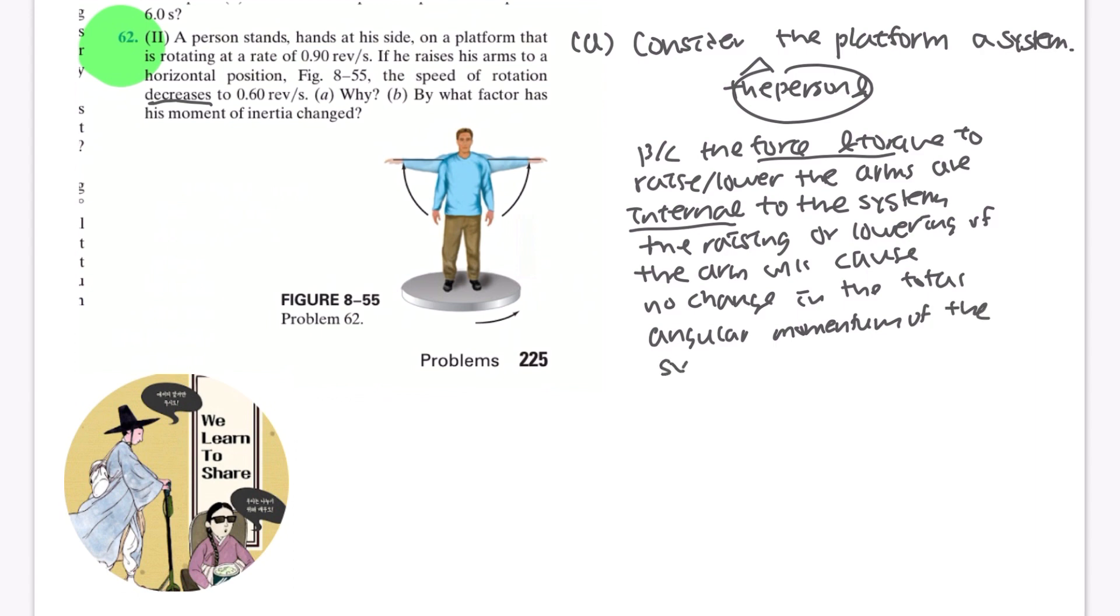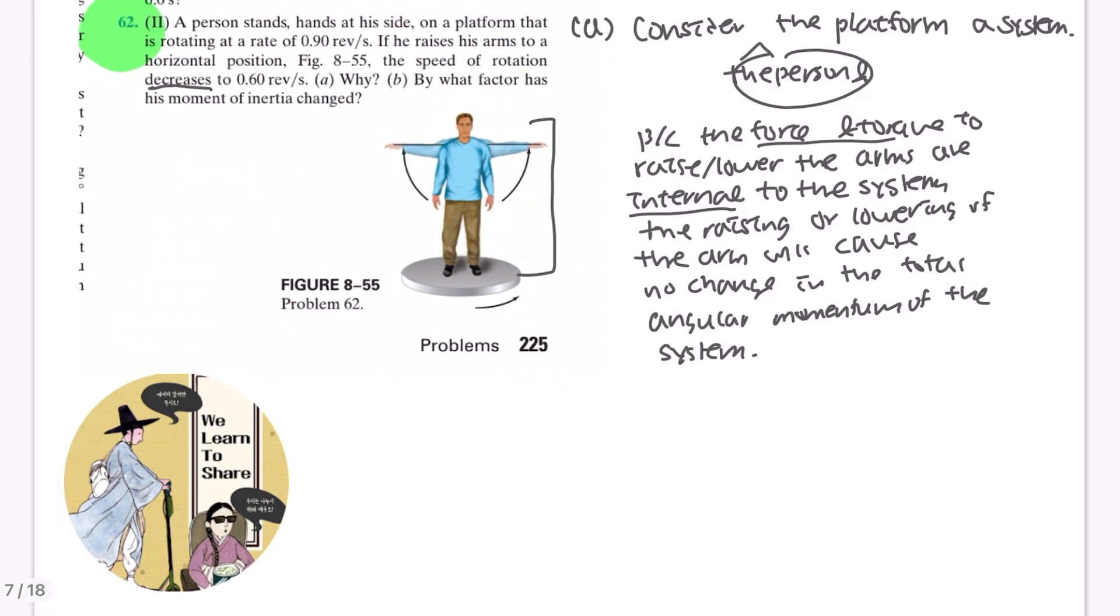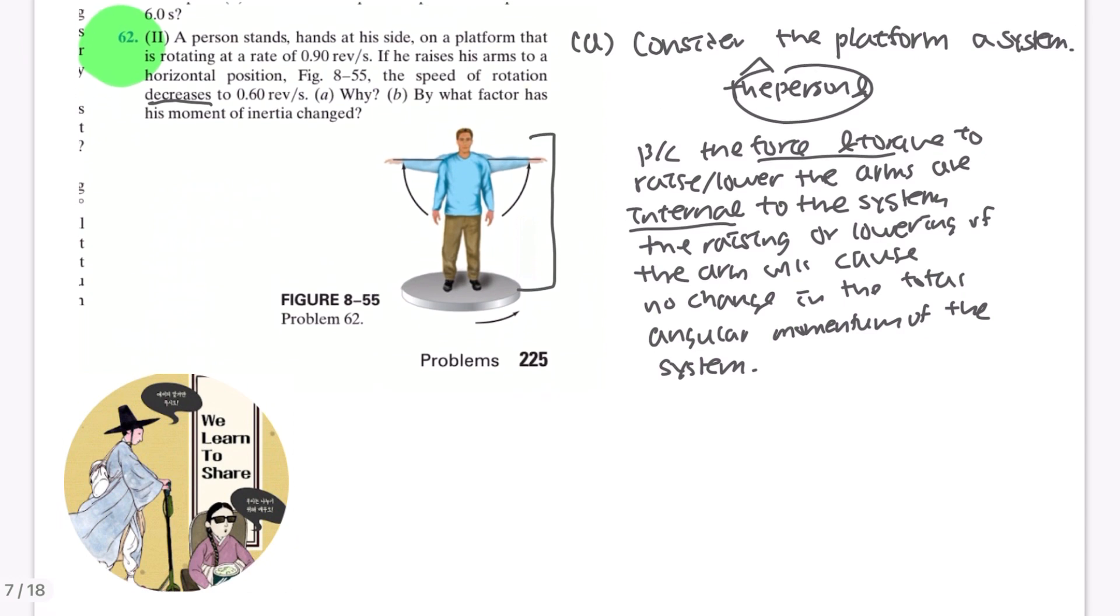Remember that the change in the angular momentum of the system only occurs when there is an external force to the system. But because this man raising or lowering his arms and the change of force and torque due to that action is something internal to the system, it will cause no change in the total angular momentum of the system. And having that set, we can find the answer to step A.